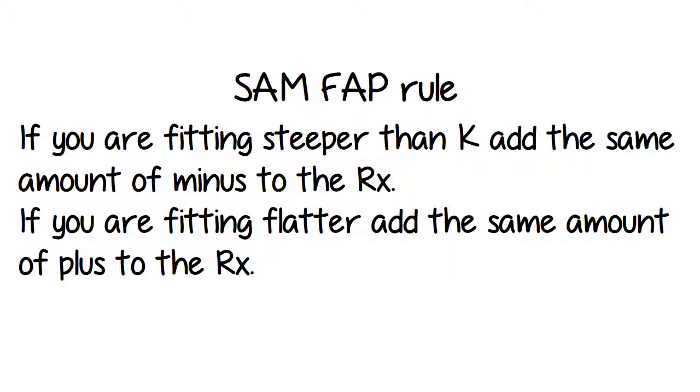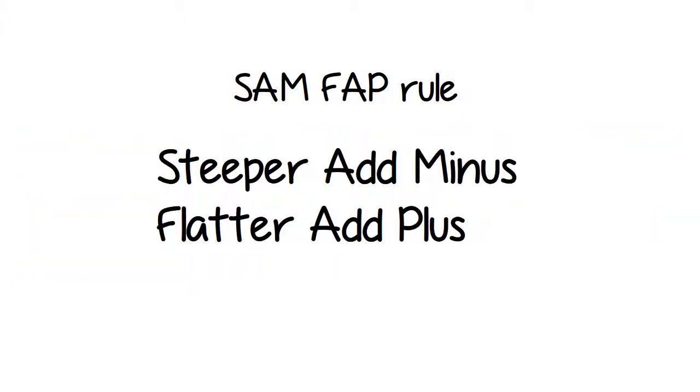There's a rule. It's called the SAM-FAP rule, which is a mnemonic. What it means is if you're fitting steeper than the K reading, add the same amount of minus to the RX. And if you're fitting flatter, you add the same amount of plus. So SAM-FAP stands for steeper, add minus, flatter, add plus. And of course, you can memorize the mnemonic, but if you forget it, just sit and think about it for a second. It makes complete sense because if you're steepening the curvature of the lens, you're adding more convergence or plus power. So to compensate, you're going to have to compensate with minus power to neutralize that.